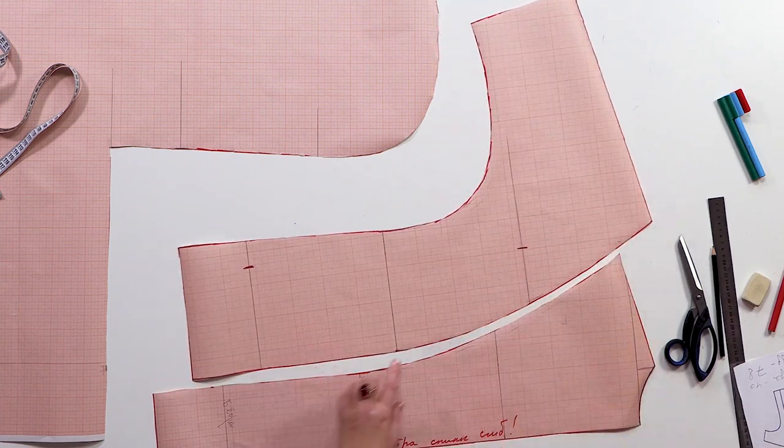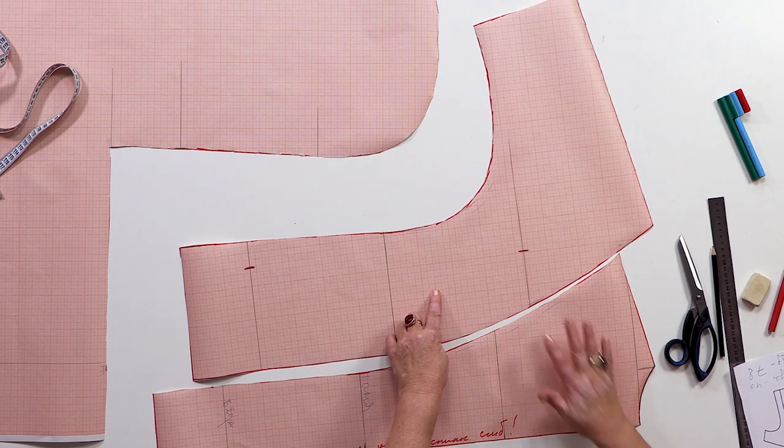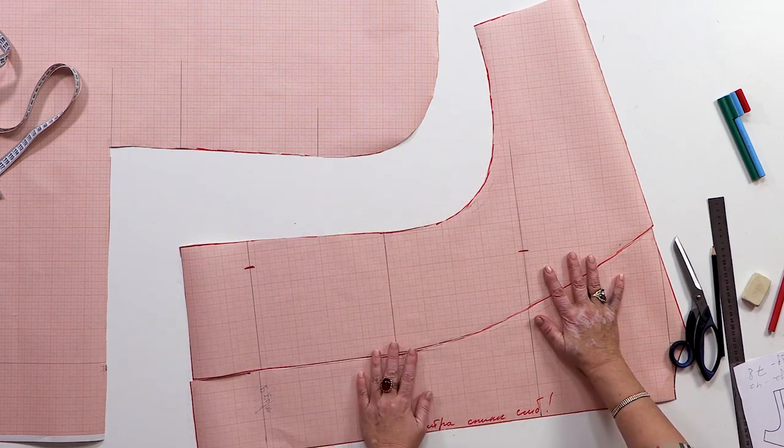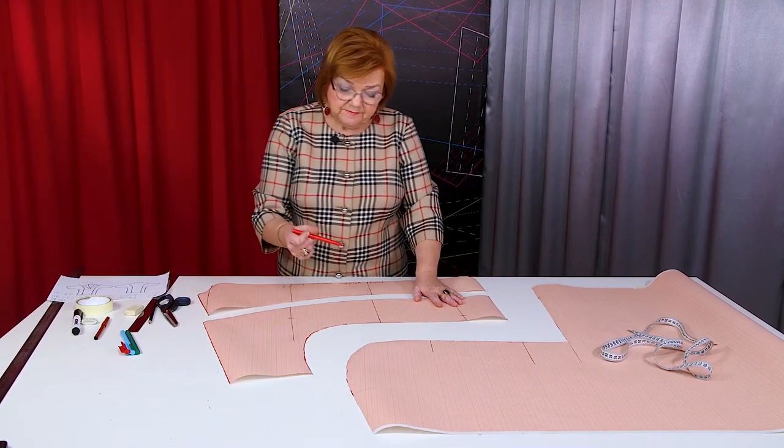Have a close look at the pattern. You can make these parts even more loose if you want to. I'm not going to do it. This is the side back detail. I need to cut two such details.